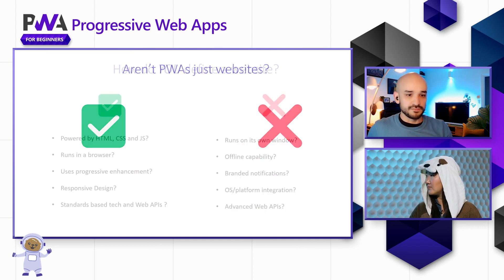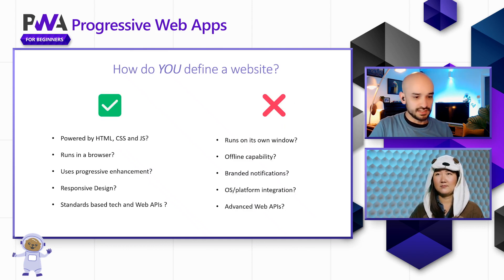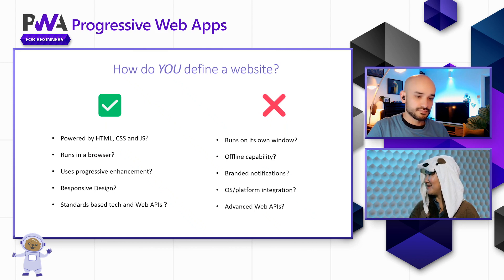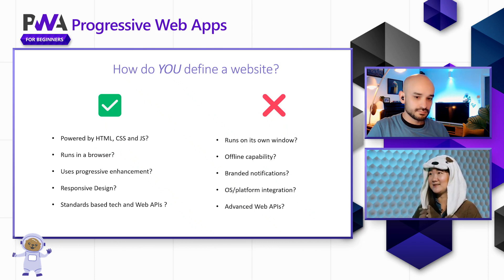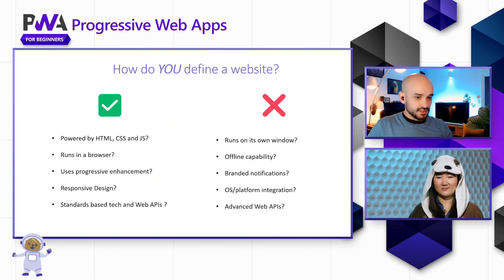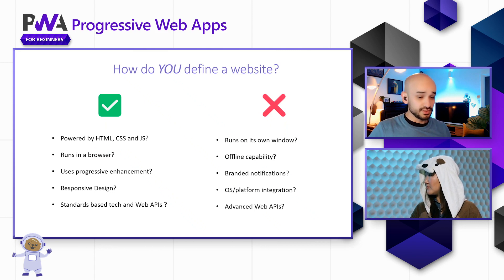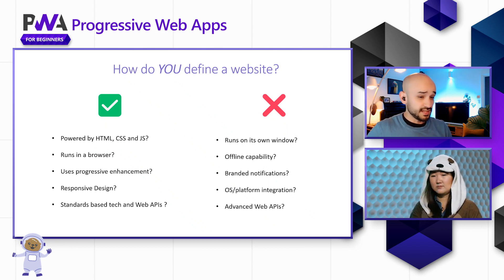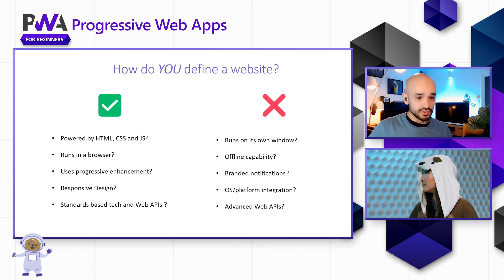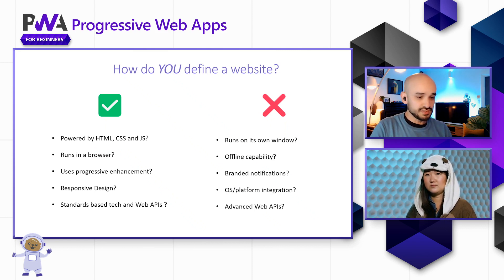I'm going to try to rephrase this question and focus on how do you define a website. Beth, how would you define a website? I think from a user perspective, I just go to my browser, type in something and kind of go from there. But from a development perspective, as a developer, I think of websites as HTML, JavaScript, CSS. Indeed. From that perspective, it's powered by web technologies. It's running in a browser, and modern websites already use progressive enhancement. They work with responsive design, so they look good on mobile, desktop, and even VR devices. It's basically standards-based technologies and web APIs.